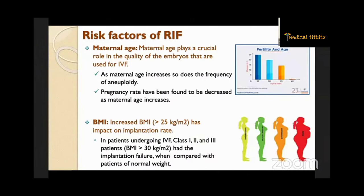What are the risk factors for recurrent implantation failure? First, maternal age plays a crucial role in the quality of embryos used for IVF. As maternal age increases, so does the frequency of aneuploidy, and pregnancy rates are found to decrease. Similarly, increased BMI has an impact on implantation rate. In patients undergoing IVF, class 1, 2, and 3 obesity — that is BMI beyond 30 kg/m² — was associated with implantation failure compared with patients of normal weight.